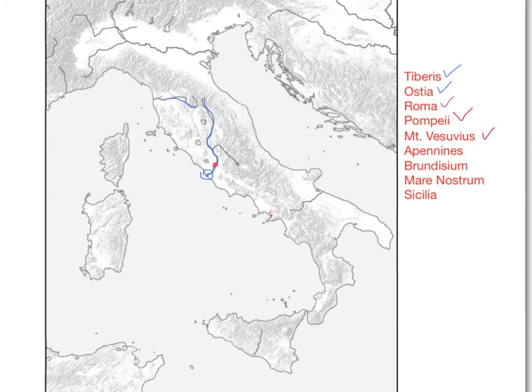The next item on the list is the Apennines — those are the mountains that run down Italy. Sometimes they are known as the spine of Italy, because they go all the way down the middle. The Apennine Mountains, there.